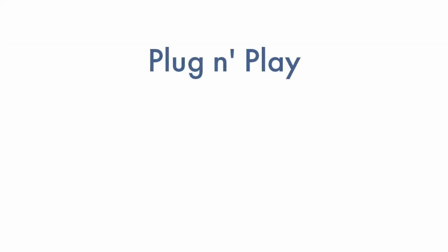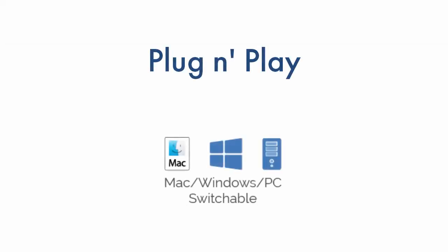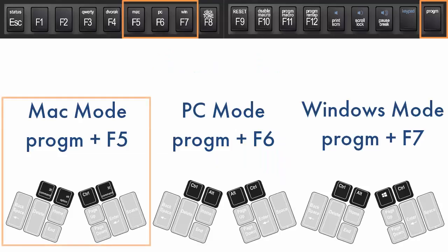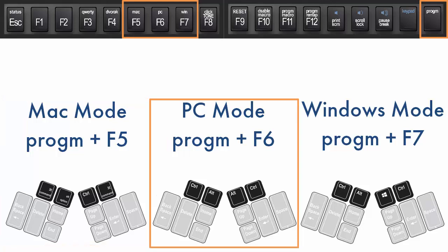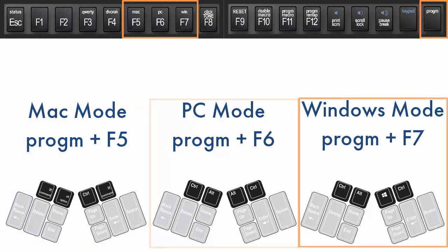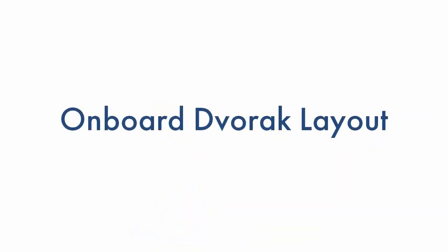The Advantage 2 is plug-and-play with Windows, Mac, and non-Windows operating systems. To tailor the modifier keys to your operating system, simply use one of the three onboard shortcuts to activate the appropriate thumb key mode.